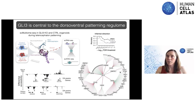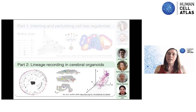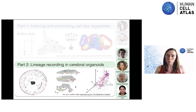I'm running out of time and will go very fast over the second part. This first part is a preprint that came out just today, so you can check it out. The second part is also a preprint published last year, where we developed a new tool to directly measure lineage relationships in cerebral organoids.